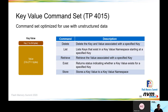We also have the key value command set. This command set was optimized for unstructured data — instead of logical blocks with a particular usage, this allows us to associate a key with a varying-sized value. In doing this, it gives a different mechanism for interacting with storage and provides for different kinds of usage models than we've had historically.